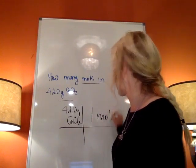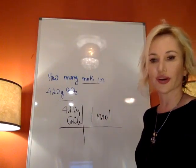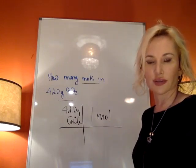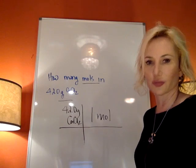Every single square on the periodic table is equal to one mole. Every element that is inside one of those boxes on the periodic table, that's one mole.